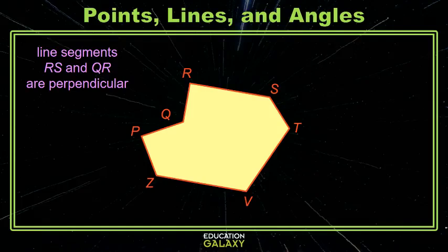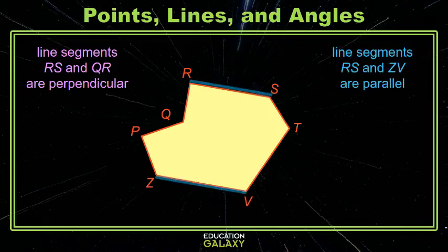How about parallel line segments? They're not going to touch. No matter how far out we draw them, they won't touch. RS and ZV are parallel line segments.